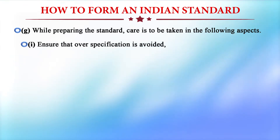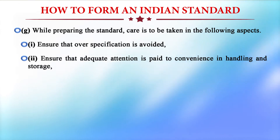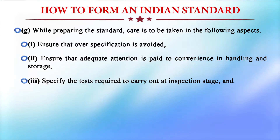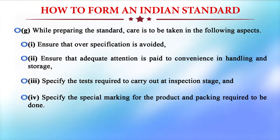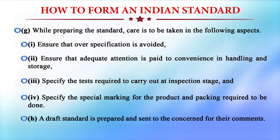If the relevant provisional council accepts the necessity, preparation of the standard is undertaken. Care is taken to: (1) ensure over-specification is avoided; (2) ensure adequate attention is paid to convenience in handling and storing; (3) safety tests required to carry out at inspection stage; (4) specify special marking for the product and packing required; (5) a draft standard is prepared and sent to the concerned parties for their comments. Despite over 15,000 standards published by ISI, a lot of work remains. As technology and market conditions change, existing standards also have to be redefined. Standardization is thus a continuous and never-ending process.